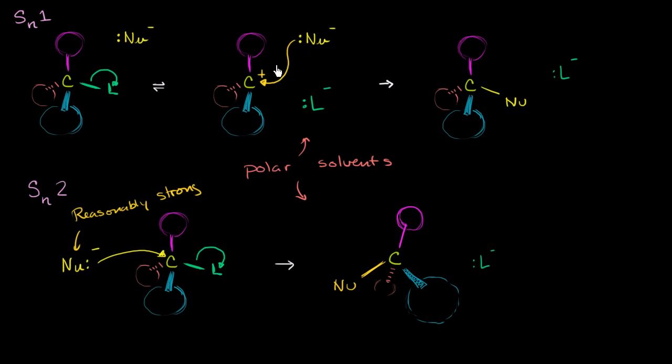In the SN1 reaction, you already have the carbocation set up here. The leaving group leaving was actually the hard part. So this could even work with a weak nucleophile. The real thing you have to do is to get this leaving group to leave.